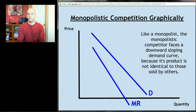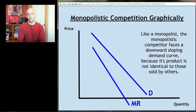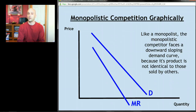Like a monopolist, the monopolistic competitor faces a downward-sloping demand curve, and the reason for that is that it's selling a differentiated product. The reason we had that straight flat demand curve for a perfectly competitive firm was that they were all selling exactly the same thing and had no control over price. Monopolistic competitors have some control over price because they have a differentiated product — they can convince you that their shoes or food are better than others'.